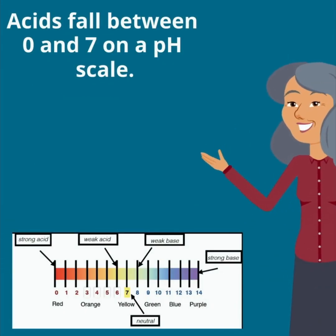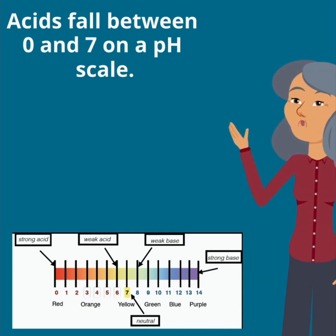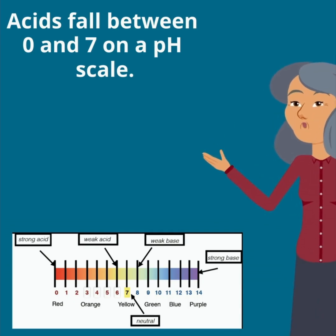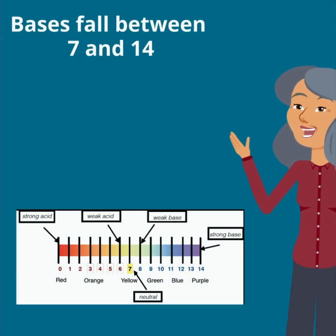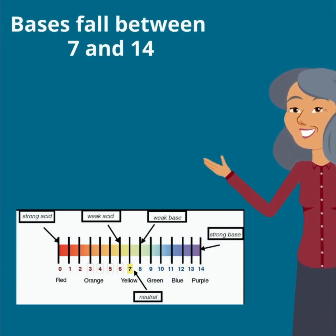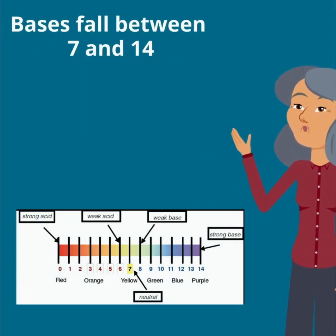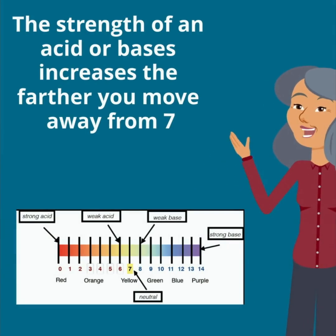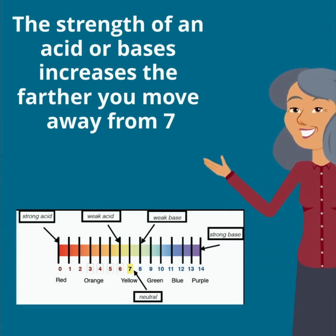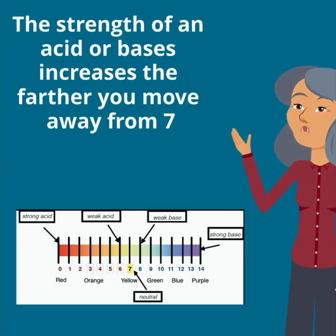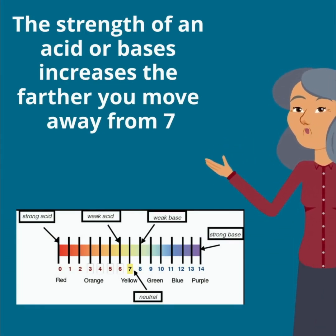Acids fall between 0 and 7 on the pH scale. Bases fall between 7 and 14. The strength of an acid or base increases the farther you move away from 7.